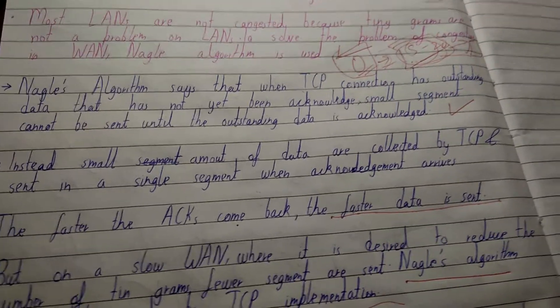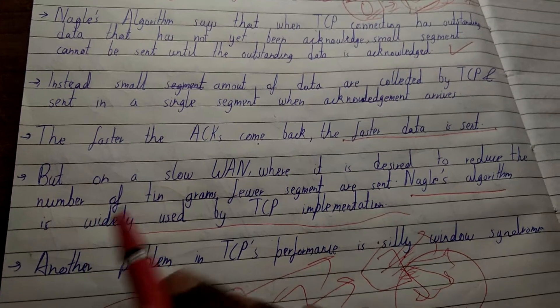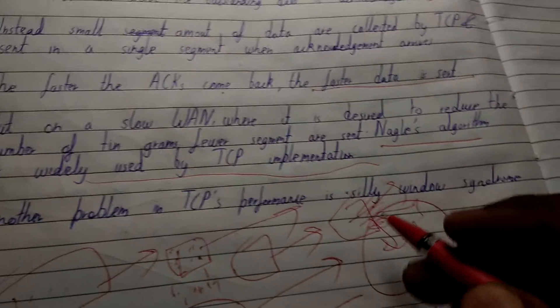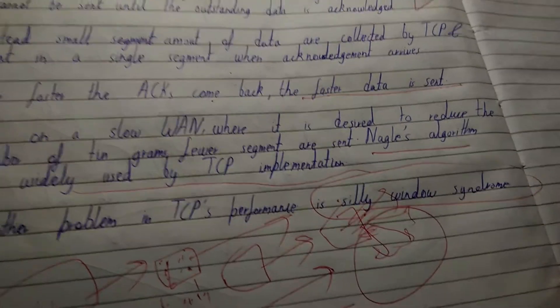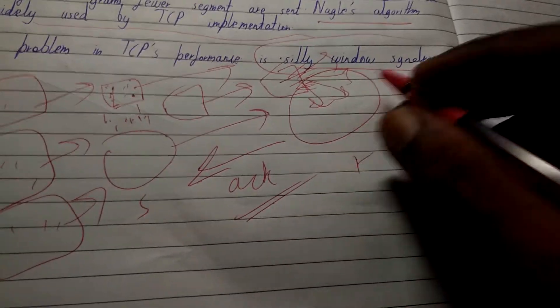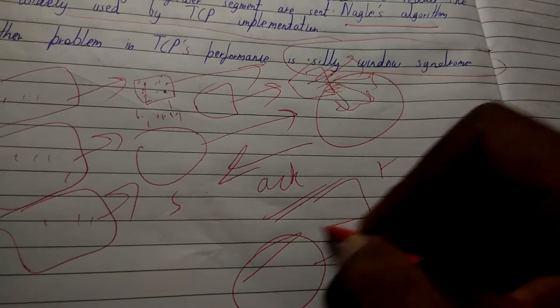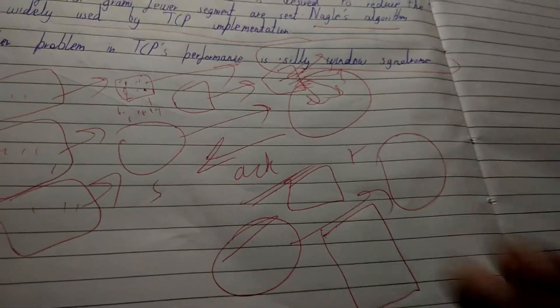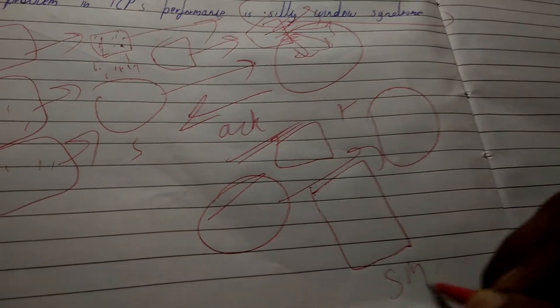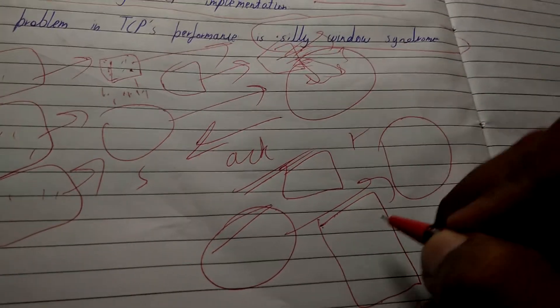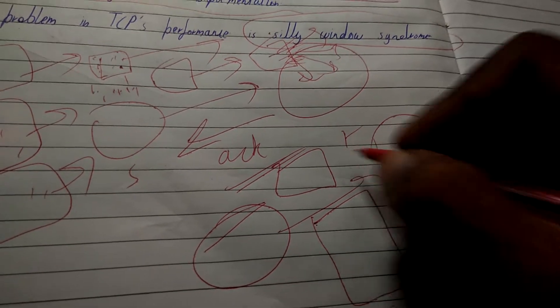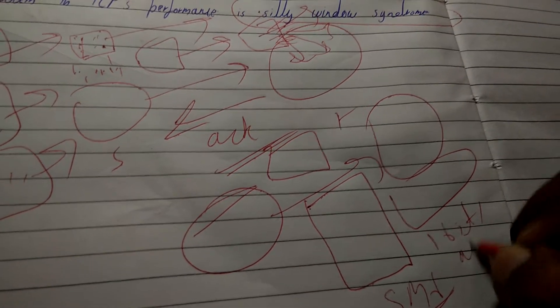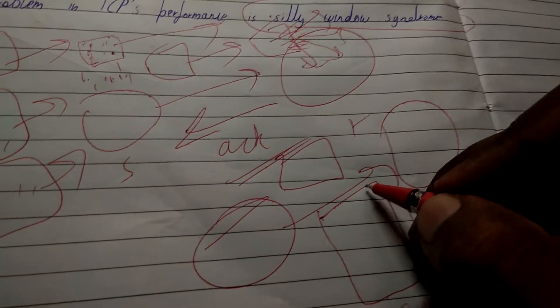Another problem in TCP performance is Silly Window Syndrome. Whenever in a network a sender sends a large packet to the receiver, there is a window — meaning a certain amount of data can be sent, like 5 MB. Sometimes at the receiver's end, the translator processes only one byte at a time, which takes a lot of time and computing.